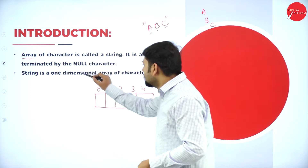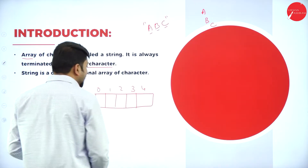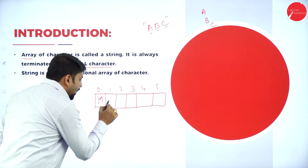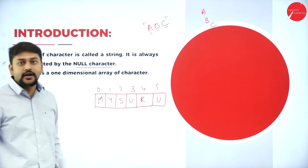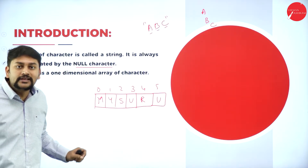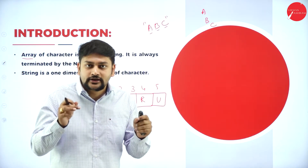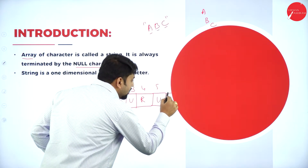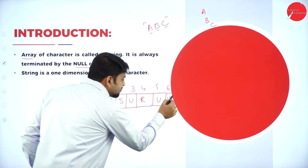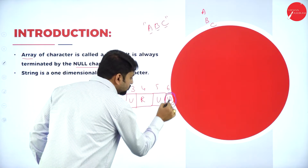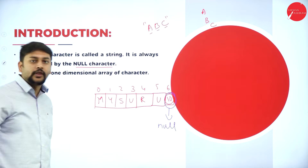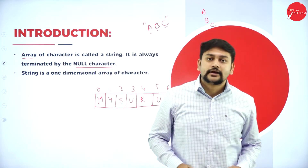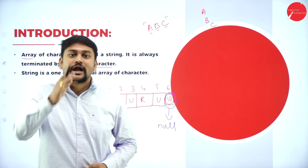Point number two: what is this null character? For example, if I have to write 'Mysore' — M, Y, S, U, R, U — the string always ends with the special character slash zero (\0). That is what I call a null character. This null character depicts that it is the end of the string. By default, in all strings you will find the null character at the end.